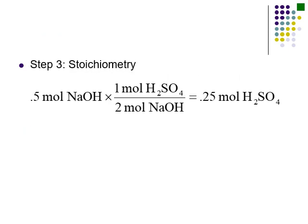Now bring it all together with stoichiometry. Start with what you know: half a mole of sodium hydroxide. Go straight to the mole-to-mole ratio from the balanced equation — moles of sodium hydroxide cancel, leaving moles of sulfuric acid, which is exactly what we wanted. The stoichiometry process is: take what you're given, turn it to moles, apply the mole-to-mole ratio, then convert to what you want.